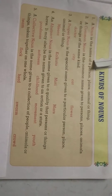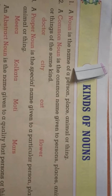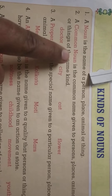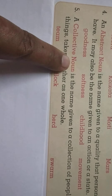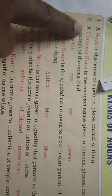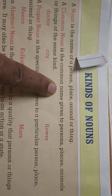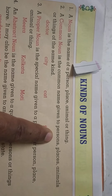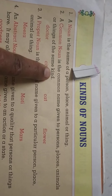So today in this English session we are going to start with kinds of nouns. We know that a noun is a name of a person, place, animal, or thing. Nouns have four kinds: first is common noun, second is proper noun, third is abstract noun, and fourth is collective noun.